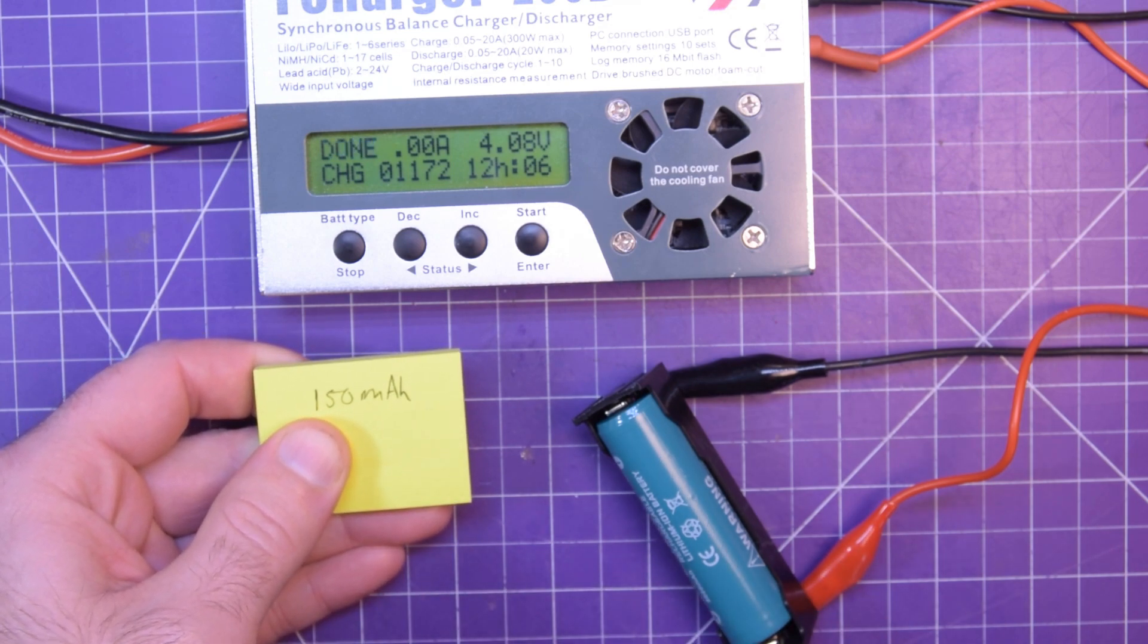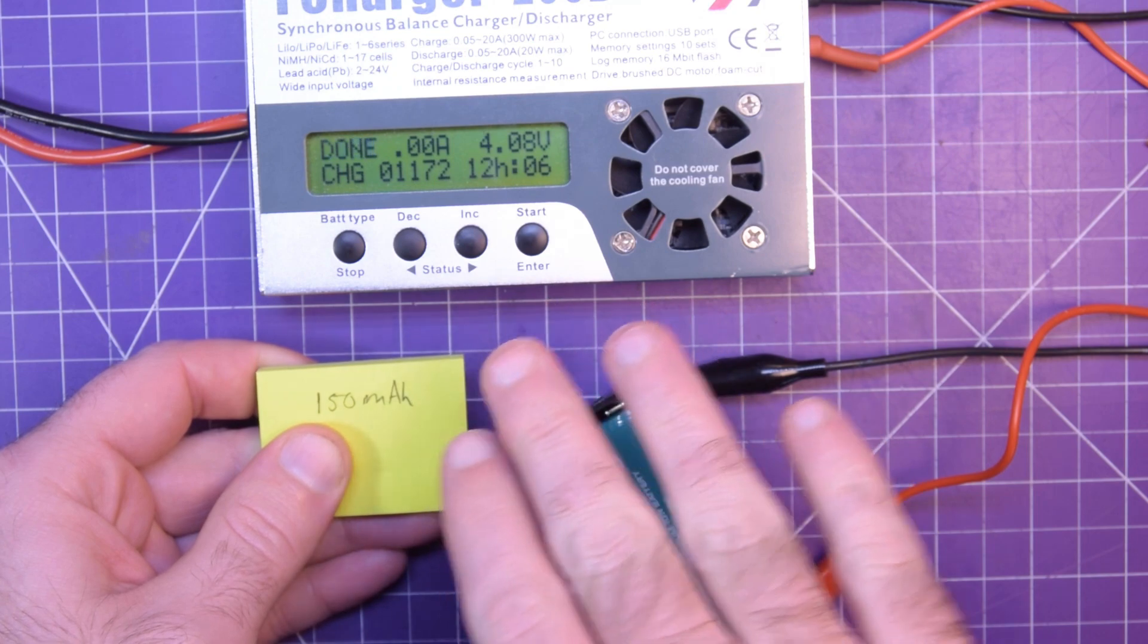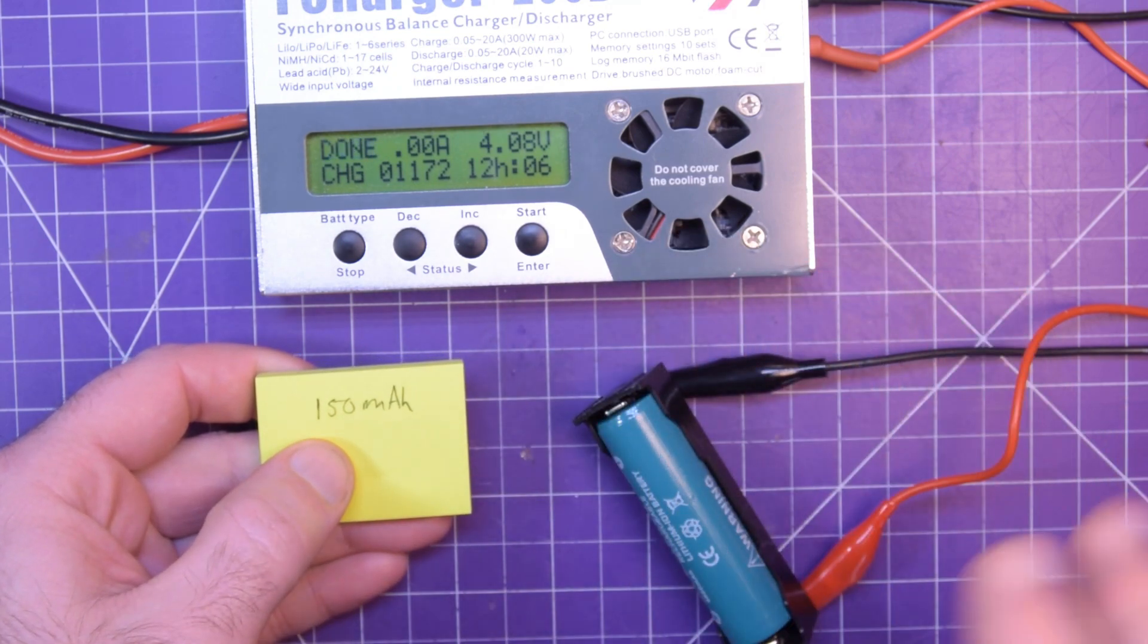So basically this thing must be trickle charged to fill up. There's too much internal resistance so the voltage climbs up way too fast and it won't accept the charge.